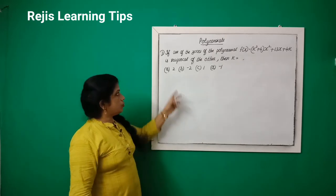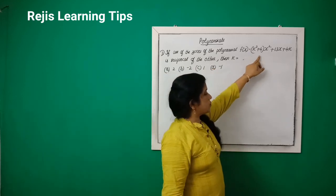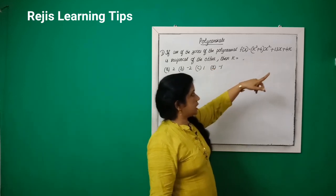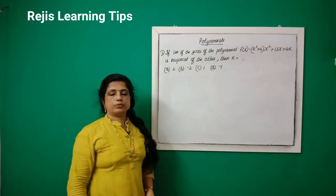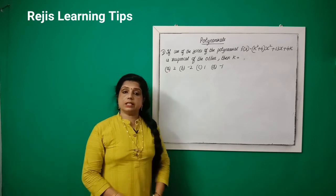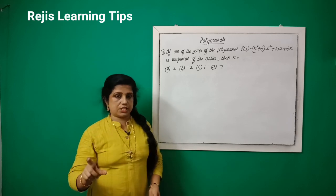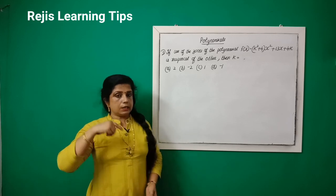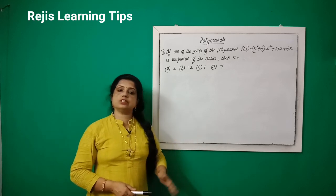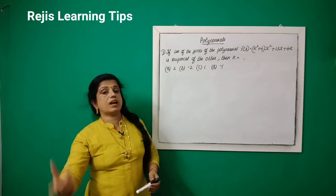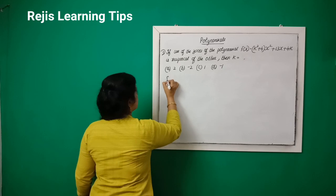Third question: if one of the zeros of the polynomial f(x) = (k² + 4)x² + 13x + 4k is the reciprocal of the other, then k is equal to? We say the zeros are alpha and 1/alpha, since one zero is the reciprocal of the other.